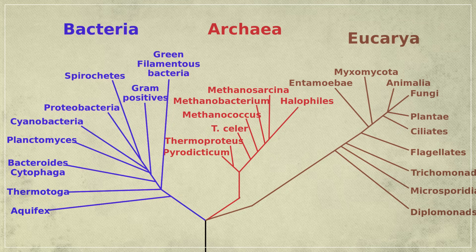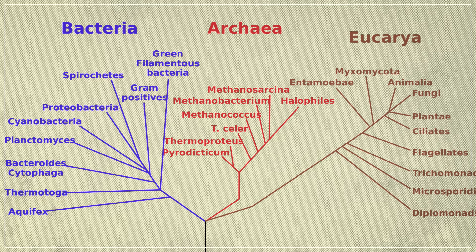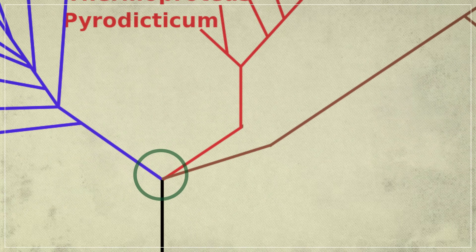But they turned out to be so diverse and so different from any other living thing that Woese proposed a new tree of life — one that divided into three domains — archaea, bacteria, and eukaryotes. And he said where those three main branches converged, there was Luca.